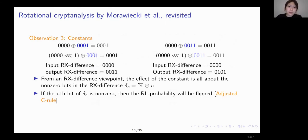Then our third observation is on the effect that the constants have on the rotational pairs. Here I show an example to show the effects when there are consecutive non-zero bits in the constants. It actually introduces a new rotational difference, which is the constant C XOR with C rotated. We call it theta C, this difference. If the bits of that rotational difference is non-zero, then we should flip the rotational differential linear probability of the specific bits on the state. And this is called the adjusted C rule.